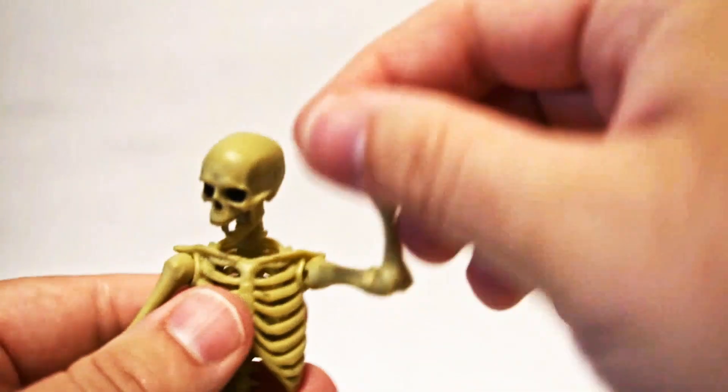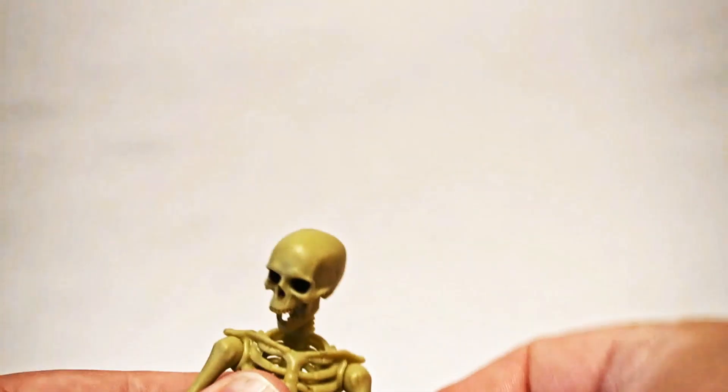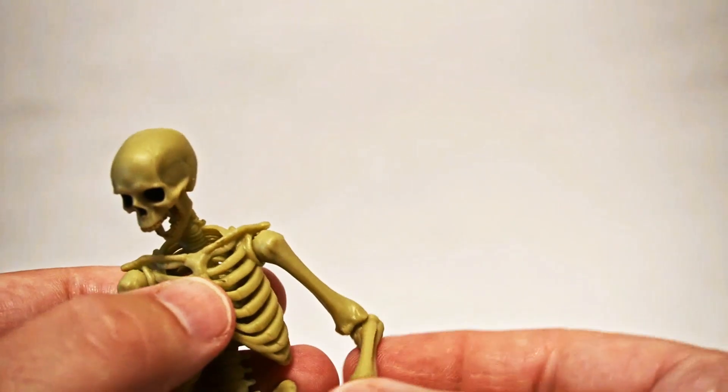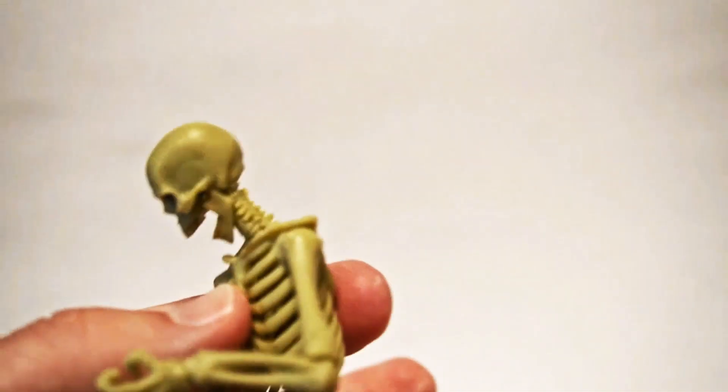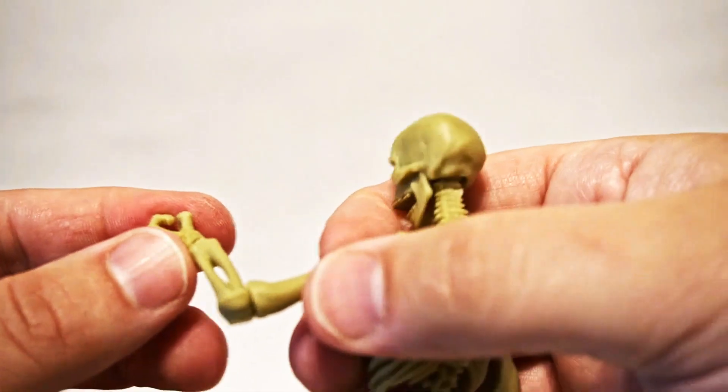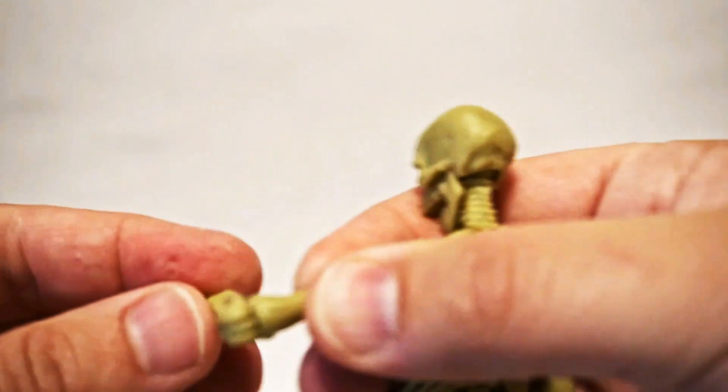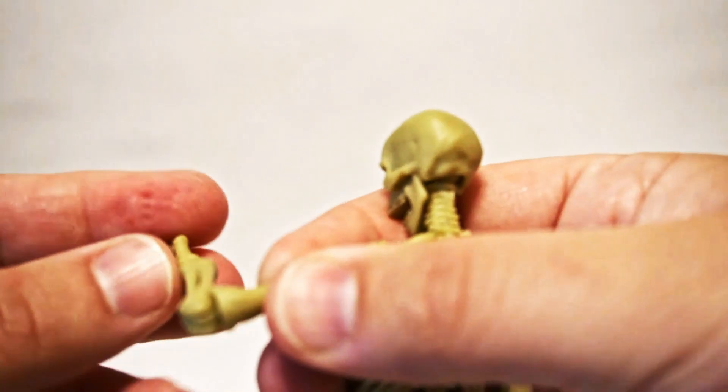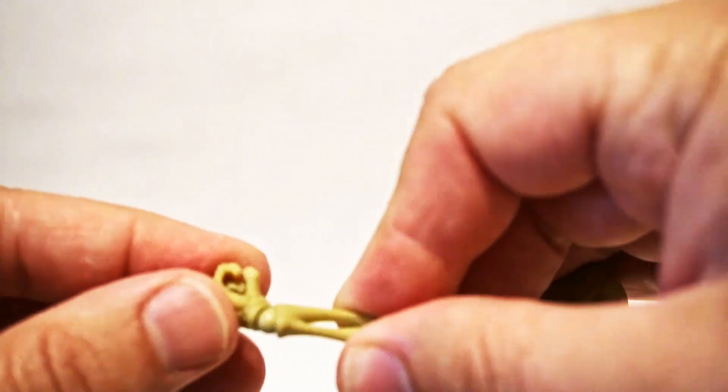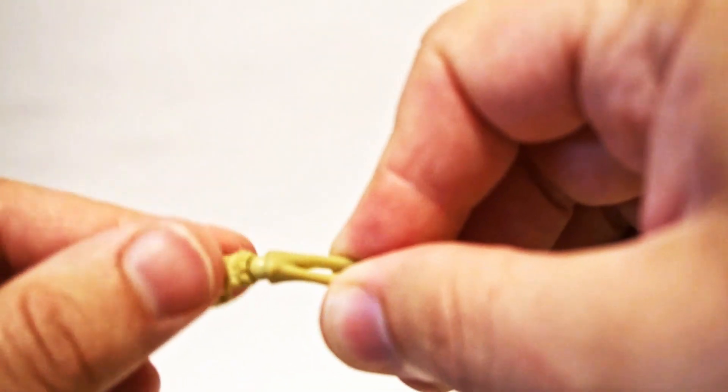Coming over to the shoulders, we do have a full 360. This also pivots up and down. We have a ball joint here at the elbow. So we do have just a single jointed elbow. But that does spin as well as bend. Same thing at the wrist. We have a ball joint here. So we do have a bend as well as a full spin.